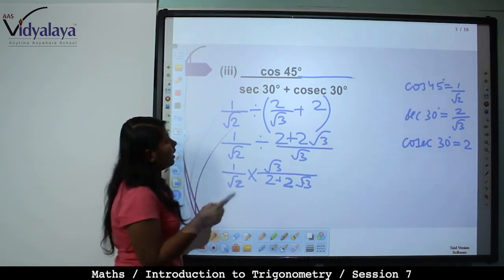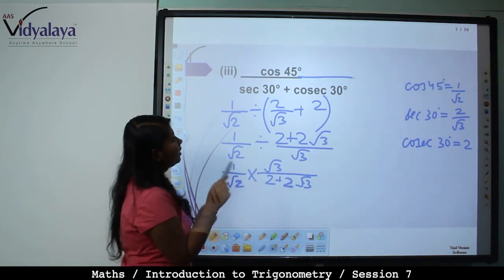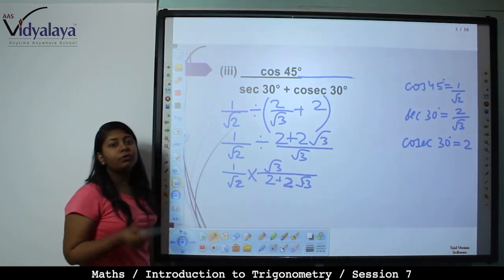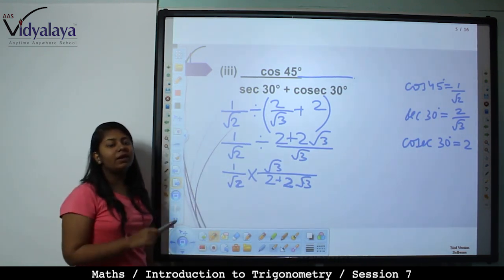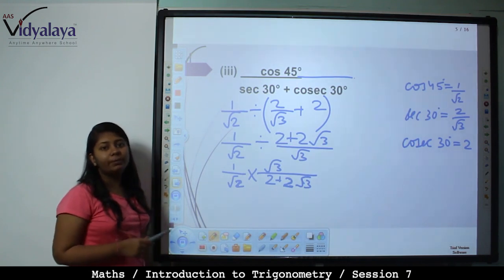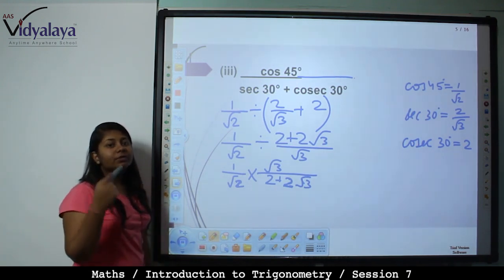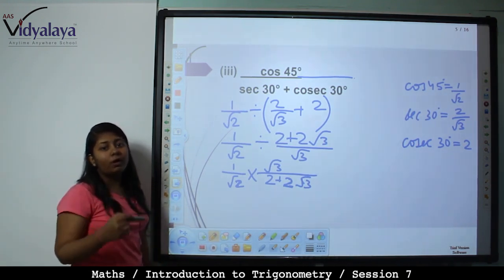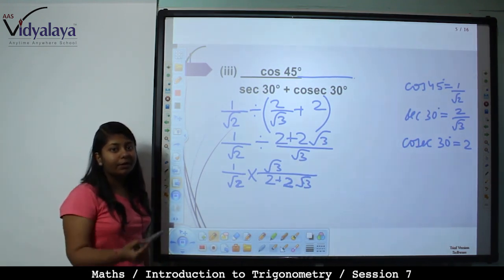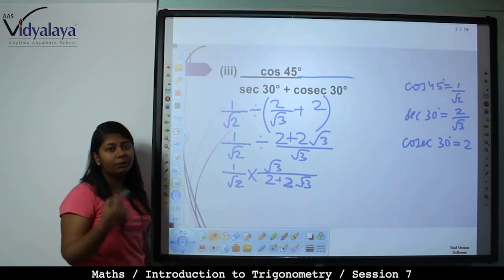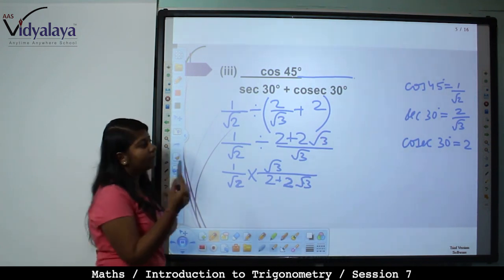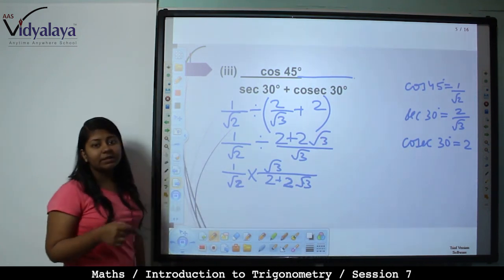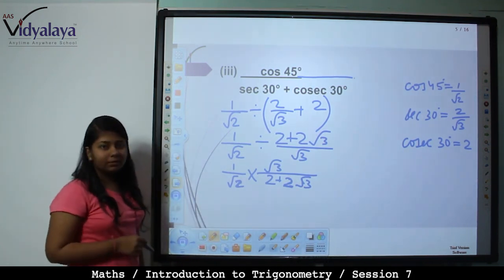Cosec 30 value is 2, because sin 30 value is 1 by 2, and if you reciprocate 1 by 2, you get 2. Because cosec is the reciprocal of sin.